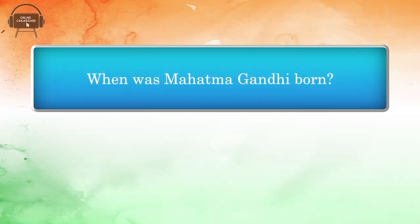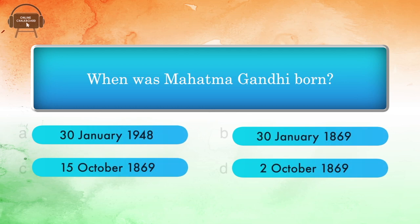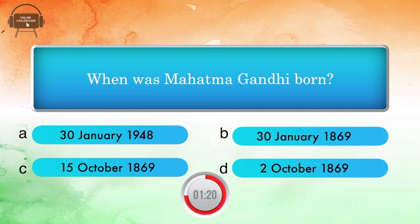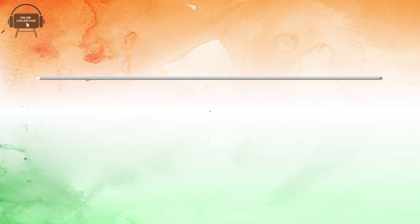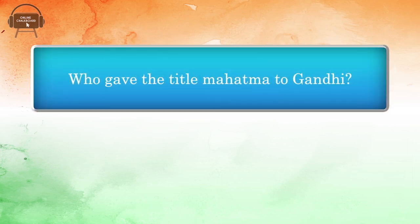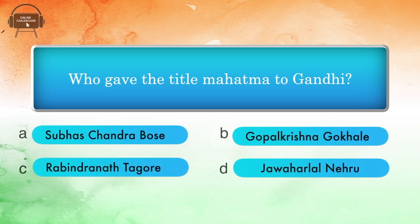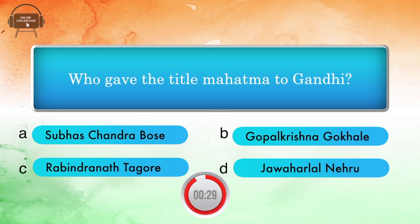When was Mahatma Gandhi born? Options: 30th January 1948, 30th January 1869, 15th October 1869, 2nd October 1869. Answer: 2nd October 1869. Who gave the title 'Mahatma' to Gandhi? Options: Subhas Chandra Bose, Gopal Krishna Gokhale, Rabindranath Tagore, Jawaharlal Nehru. Answer: Rabindranath Tagore.